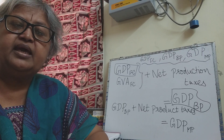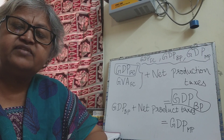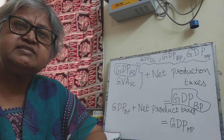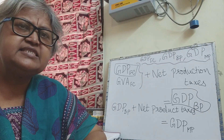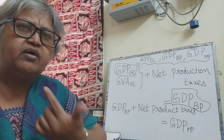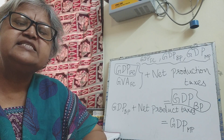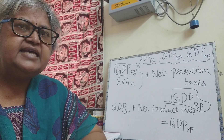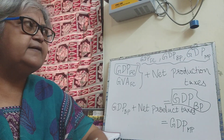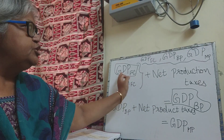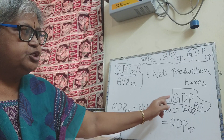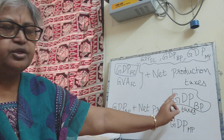Firms end up paying production taxes in the form of land revenue, stamp fee, and registration fee. These are lump sum taxes paid by the firms. Similarly, there are production subsidies - lump sum monetary support offered by the government to firms. The difference between production taxes and production subsidies is what gives us net production taxes.